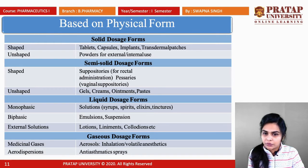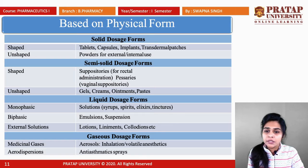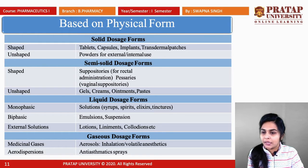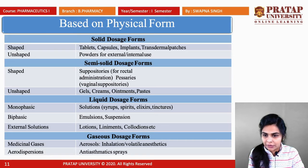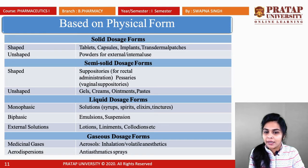In liquid dosage forms there are three classes: monophasic, biphasic, and external solutions. Monophasic liquid dosage forms include solutions, syrups, spirits, elixirs, and tinctures. Biphasic liquid dosage forms include emulsions and suspensions. External solutions include lotions, liniments, and collodions.